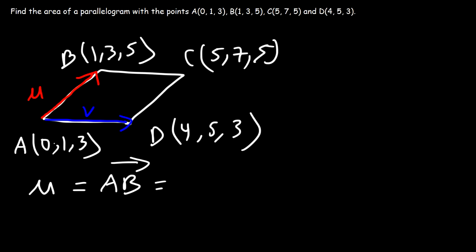Now going from A to B, the x value increases by 1 as we go from 0 to 1, so that's going to be 1i. Next, if we look at the difference in the y values going from 1 to 3, that's an increase of 2, so it's going to be 2j. And then comparing the z values, 3 to 5, or 5 minus 3, that's a change of 2, so 2k.